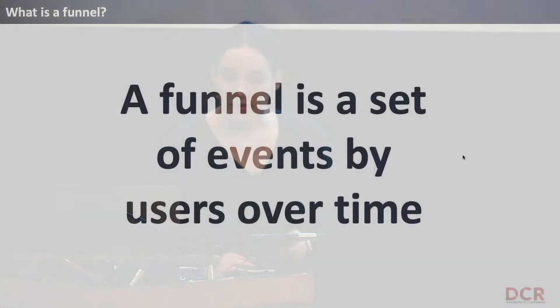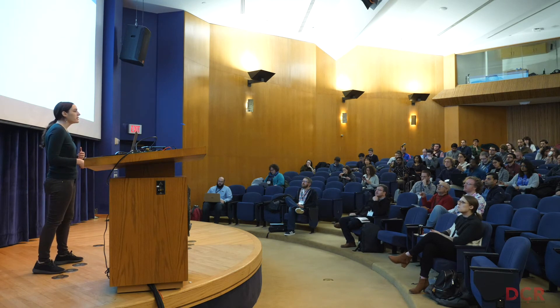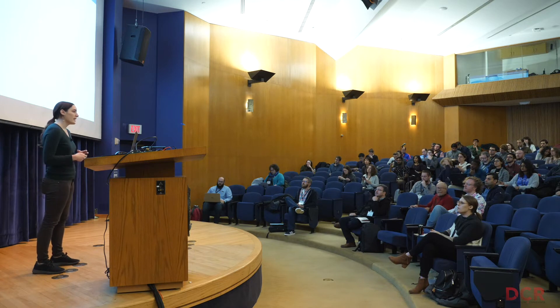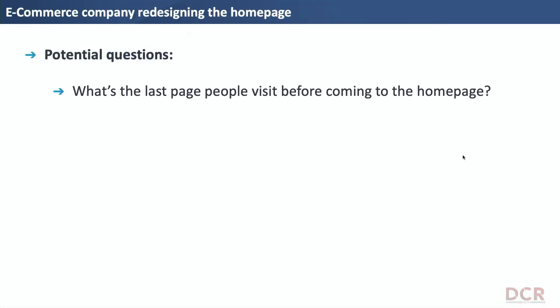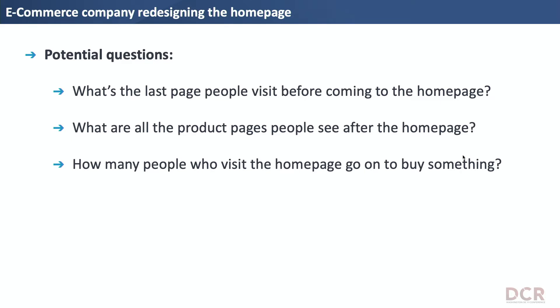So what do I mean by a funnel? A funnel is a set of events by users over time. Let's say you're an e-commerce company redesigning your home page and you want to understand the behavior of users visiting it. Some things you might want to know: what was the last page people saw before coming to this home page? What product pages did they see afterward? What is the conversion rate, and what if you limit that to a two-day window?